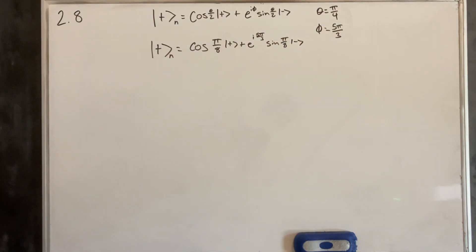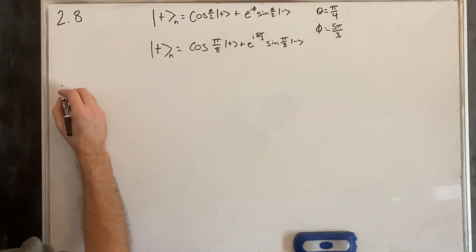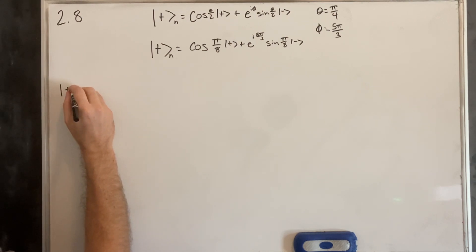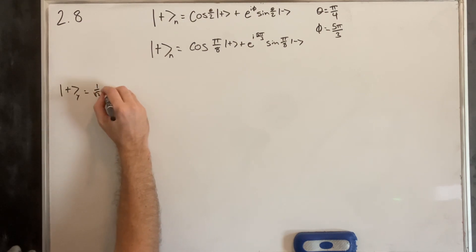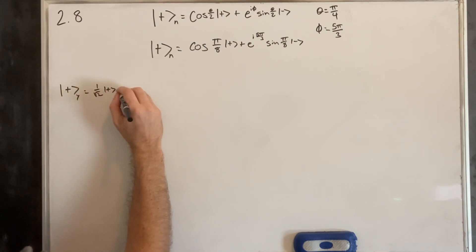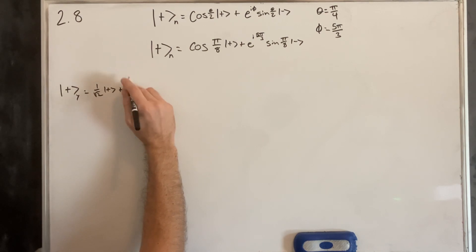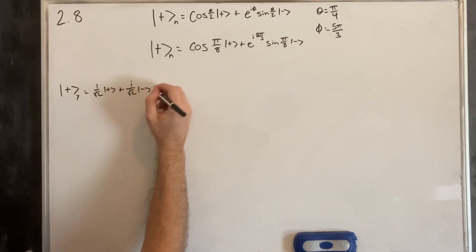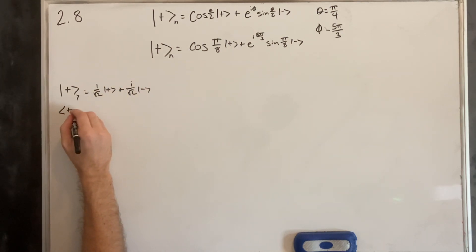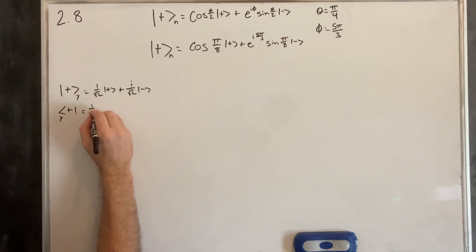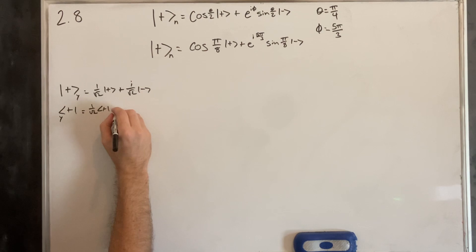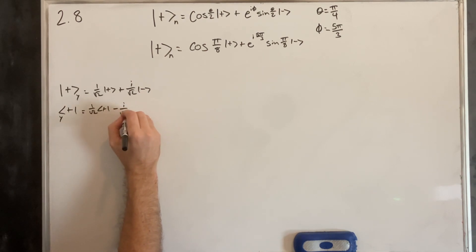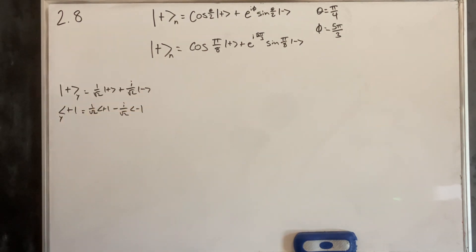As a reminder, our y-up ket is going to be 1 over root 2 times up, plus i over root 2 times down. Which means the bra is going to be 1 over root 2 bra-up, and then we complex conjugate the i, so minus i over root 2 bra-down.